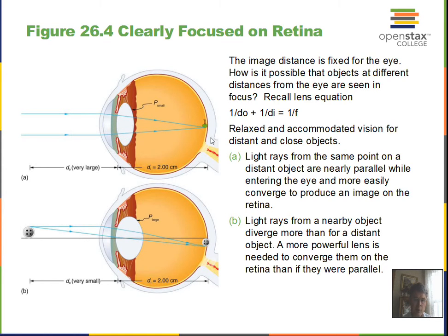This process of the lens changing shape and changing its focal length is called accommodation. Young people are better able to accommodate and change the shape of their lens than older individuals. Older individuals might wear bifocals, trifocals, or progressive no-line bifocal lenses, because the lens is stiffer and the muscles are weaker. Consequently, the eye is not able to adjust the focal length enough to both see distant objects and close objects clearly.